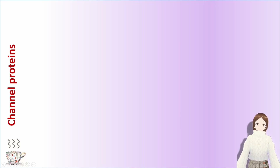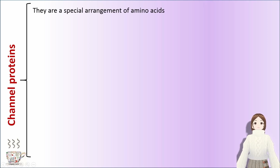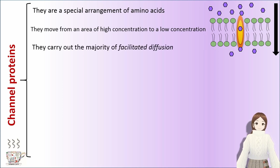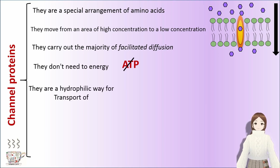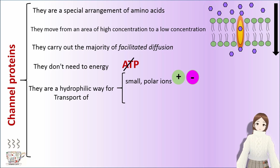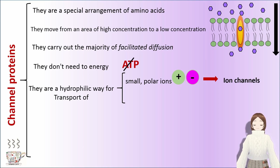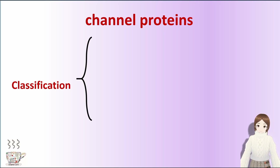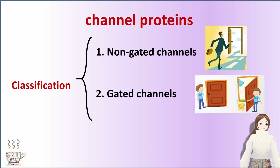Channel proteins. They are a special arrangement of amino acids. They move from an area of high concentration to a low concentration and carry out the majority of facilitated diffusion. They don't need energy. They are a hydrophilic way for transport of small polar ions — these channel proteins are called ion channels — and a hydrophilic way for transport of water — these channel proteins are called aquaporins. Channel proteins can be classified into two subgroups: non-gated channels and gated channels.